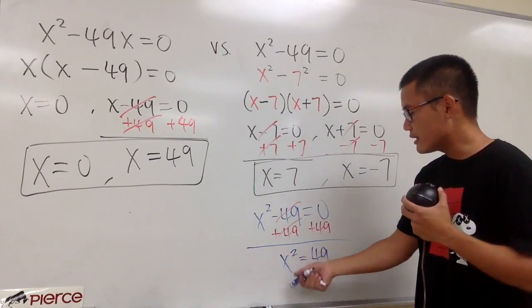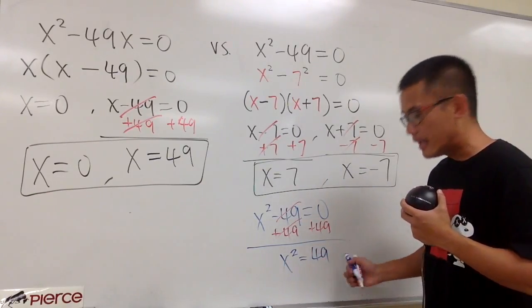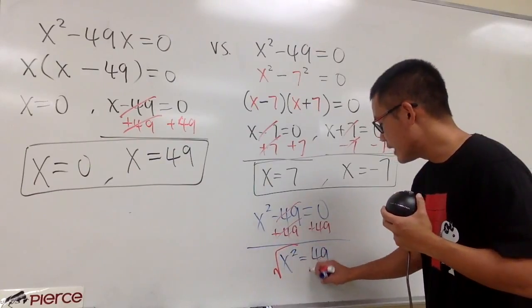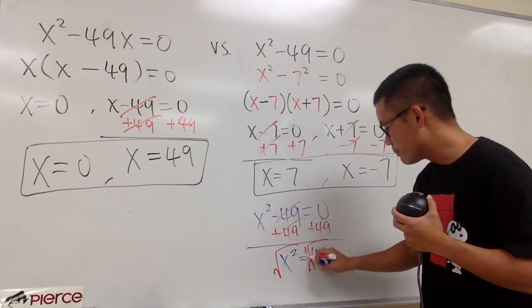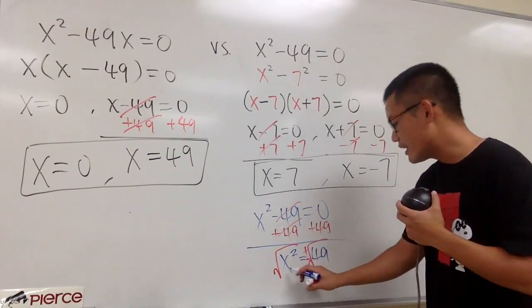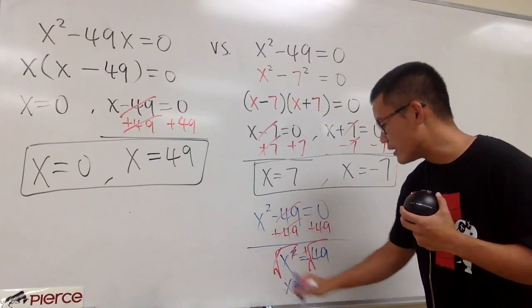We only have the x right here. x squared is equal to a number. And then, take the square root on both sides. Be sure to put a plus minus. And then, we can get x by itself right here. After we cancel, cancel.